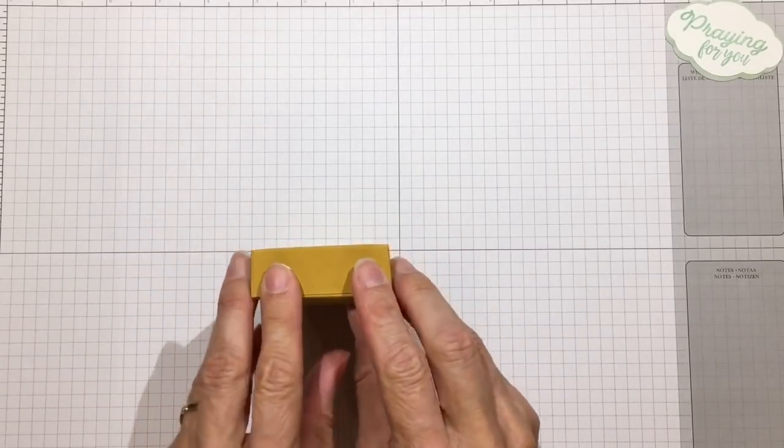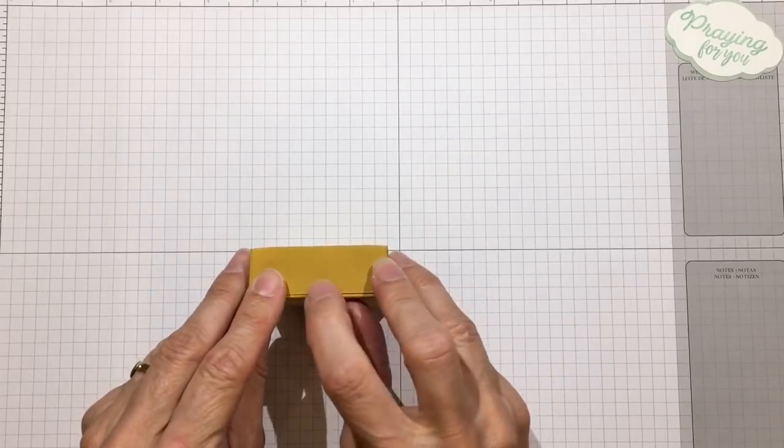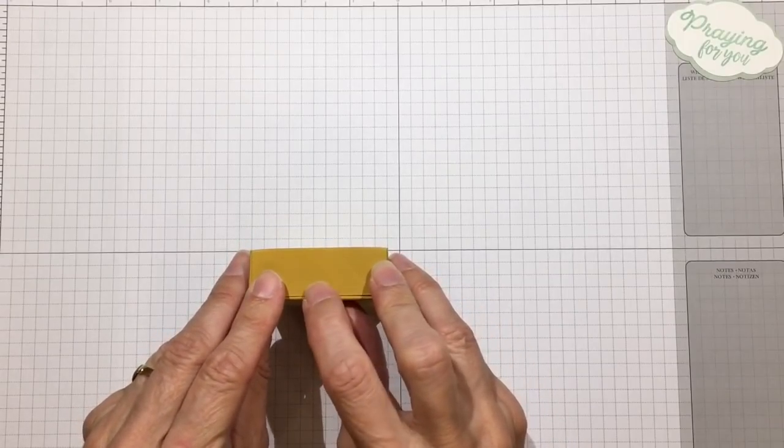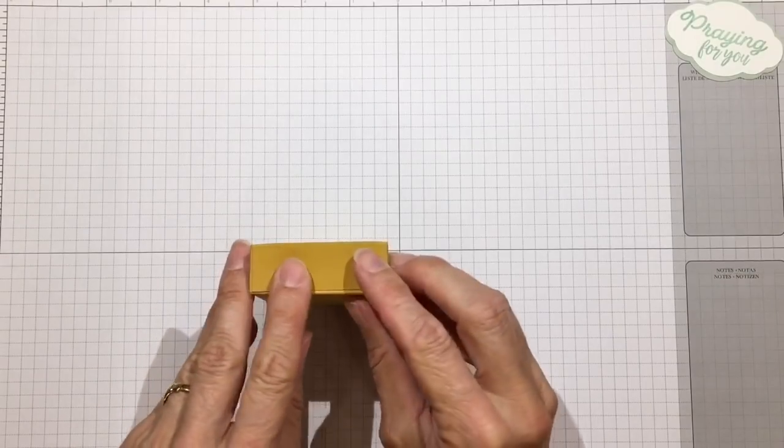Normally I'll go ahead and punch a half circle opening on this one, but because we're gluing the tabs on it we won't need that this time. Just go ahead and hold that until it's glued.